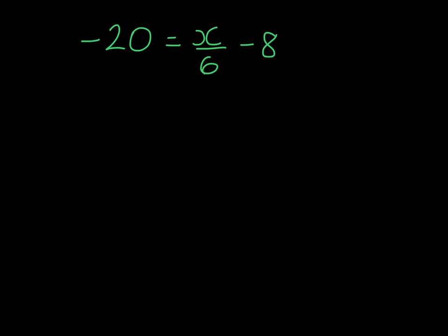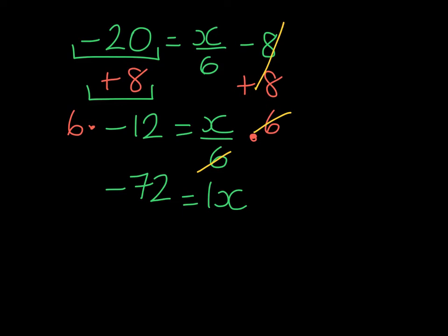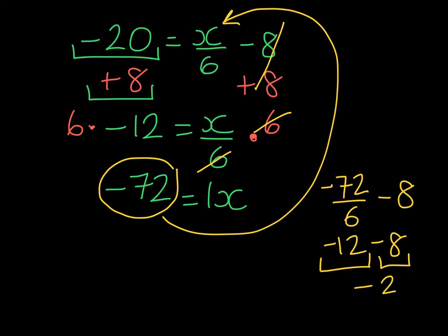In this equation the first inverse operation would be to add 8 on both sides. On the right-hand side, subtract 8 and add 8 cancel, leaving x divided by 6. And on the left-hand side, if I owe 20 but I have 8, I still owe 12. Here we have x being divided by 6, so the inverse would be to multiply by 6 on both sides. On the right-hand side that leaves 1x, and on the left-hand side 6 times negative 12 is negative 72. Checking: negative 72 divided by 6 gives negative 12; if I owe 12 and I owe 8, I do indeed owe 20. So we've solved it correctly.